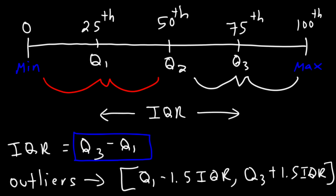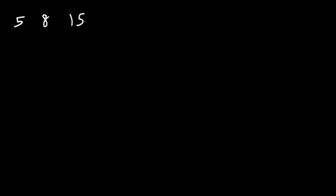We're going to do some examples so that you can see how this process works, and how we can go about determining if a number is an outlier or not. So let's say we have the numbers 5, 8, 15, 26, 10, 18, 3, 12, 6, 14, and 11.